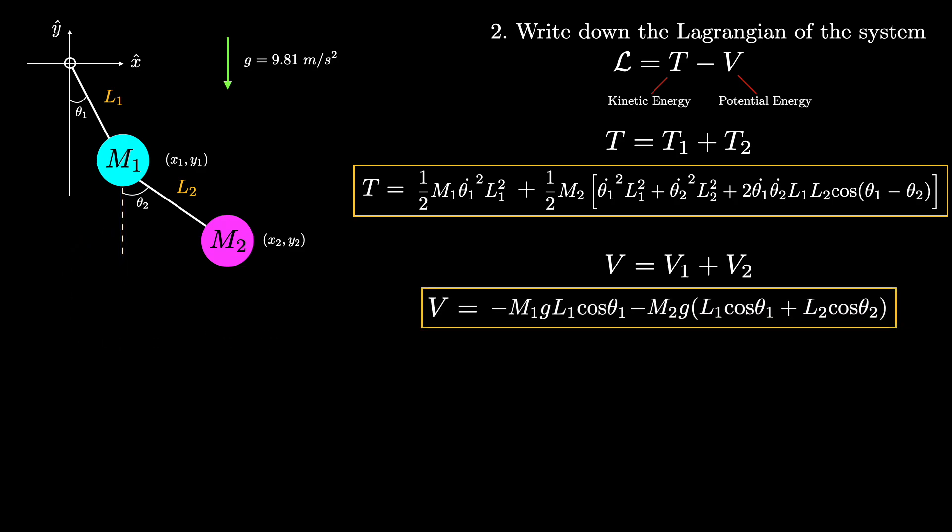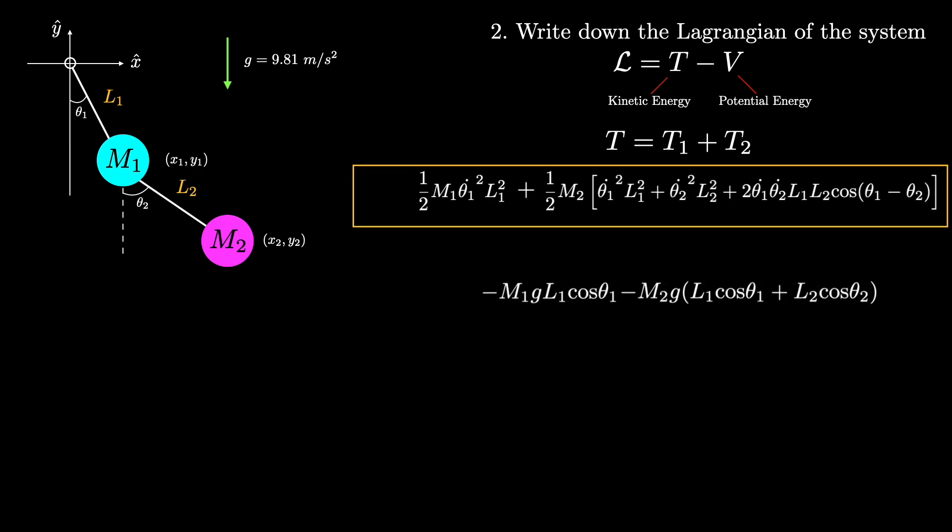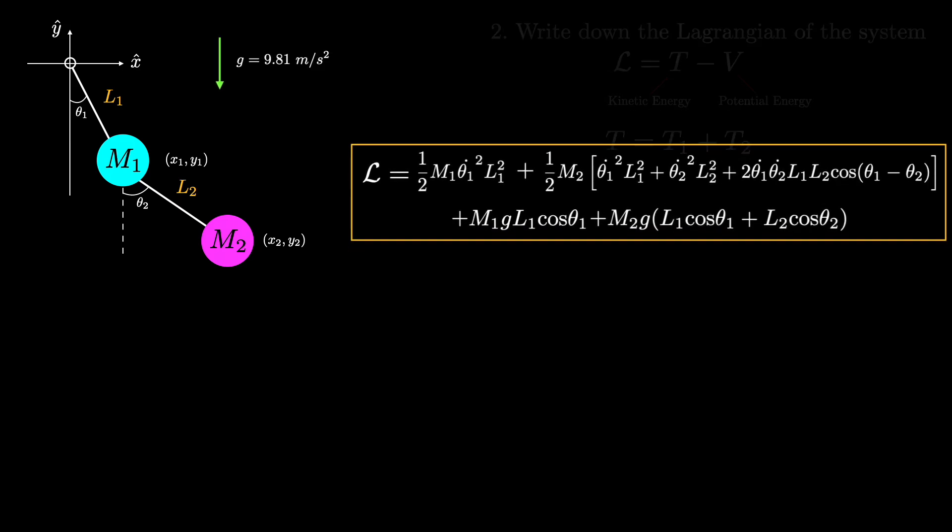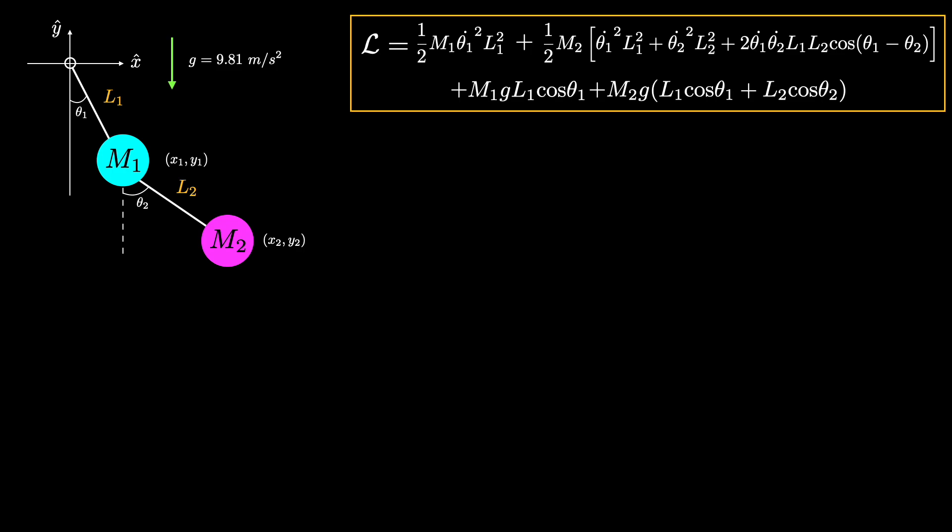Now the Lagrangian of the system is the difference between the kinetic energy and the potential energy. So we can combine these results to get this expression. Okay, now that we have our Lagrangian in hand, we are ready to write down the Euler-Lagrange equation. This is given by partial L by partial theta minus d by dt of partial L by partial theta dot equals zero. Before solving this, I'd like to give some brief motivation for where this equation comes from.